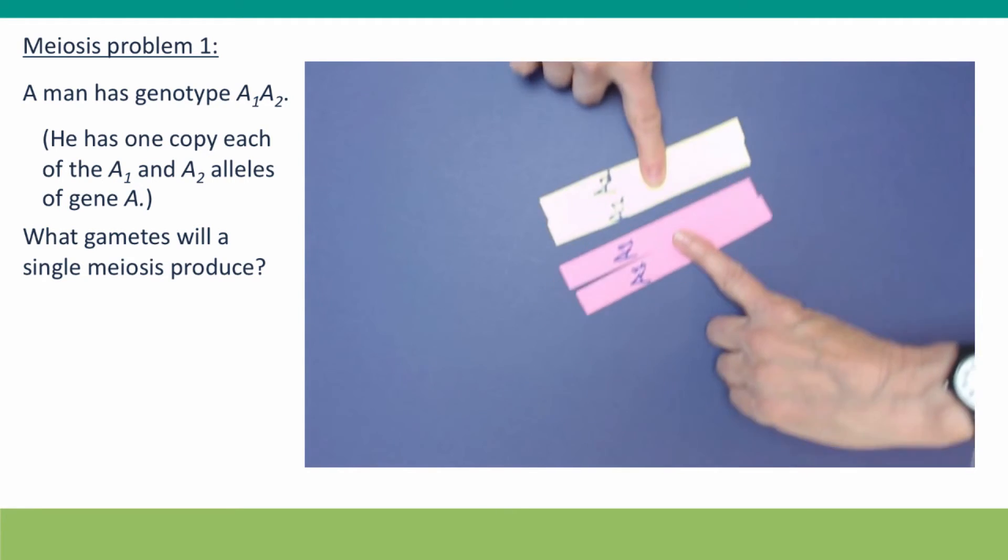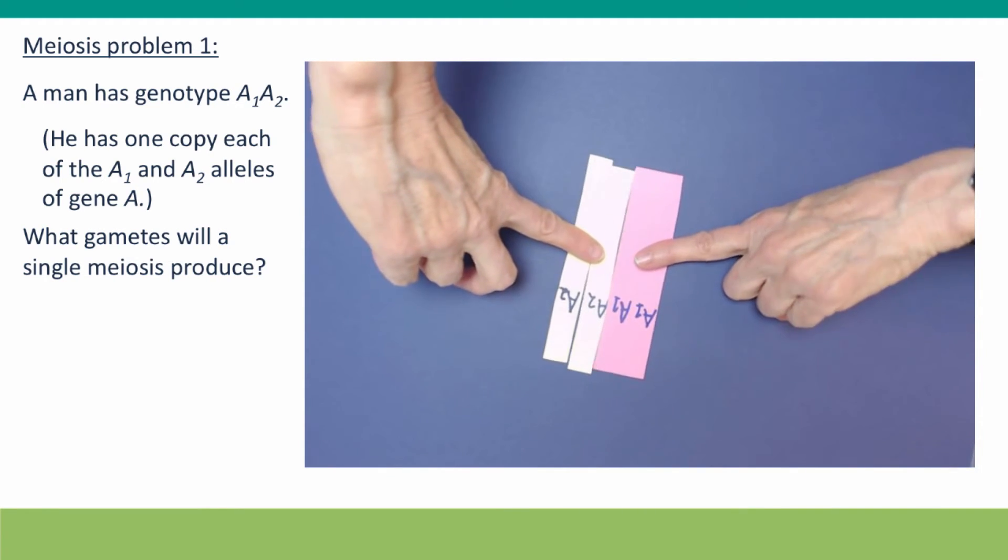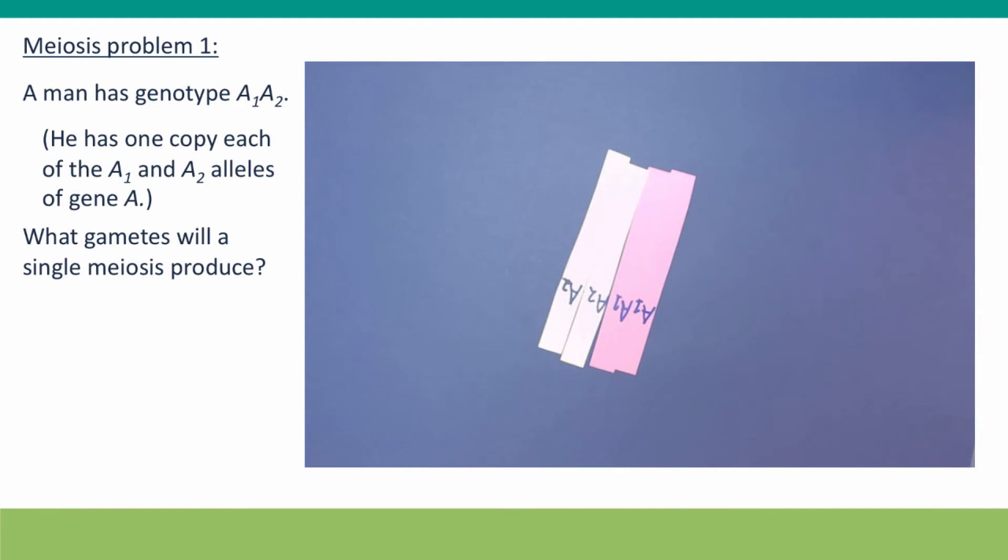Once that happens, this tug of war moves the paired homologues, each consisting of two sisters, to the middle of the cell. And once all of the chromosomes in the cell have found their partners, found their spindle fibers, and been moved to the center of the cell, then the signal is generated that allows the homologues to separate.